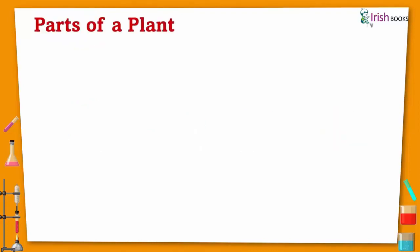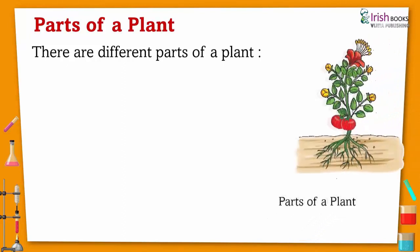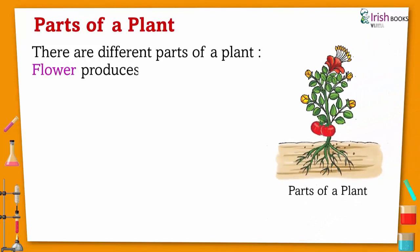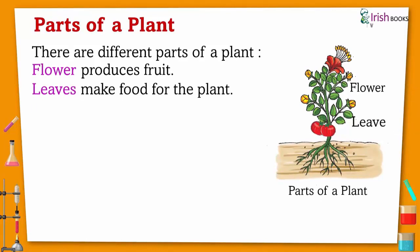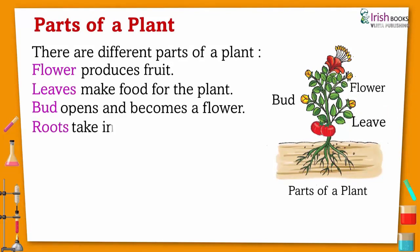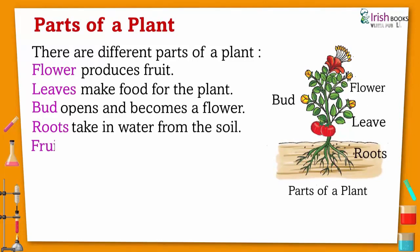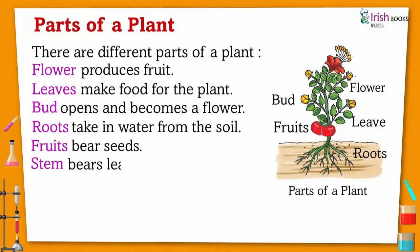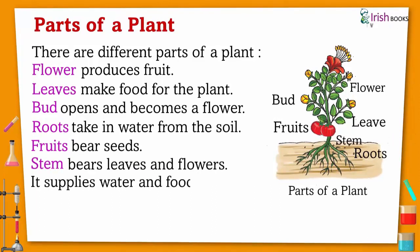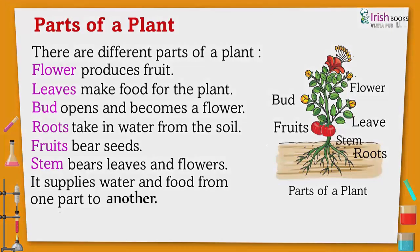Parts of a plant. There are different parts of a plant. Flower — produces fruit. Leaves — make food for plant. Bud — opens and becomes a flower. Roots — take in water from soil. Fruits — bears seeds. Stem — bears leaves and flowers, and supplies water and food from one part to another.